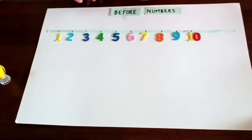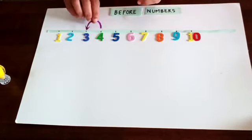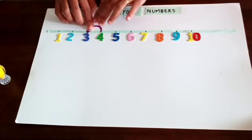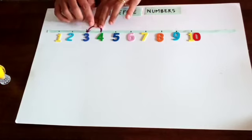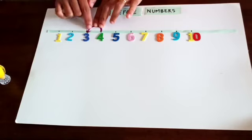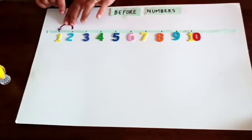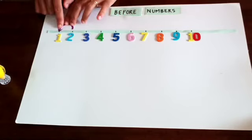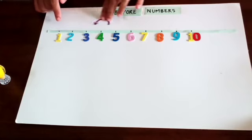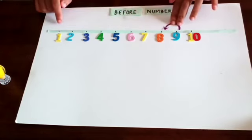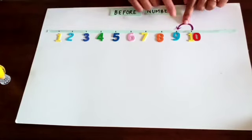One more number we will see. Number 4 — one jump backwards. Before 4, number 3 comes. Before 2, 1 comes. Before 10, 9 comes.